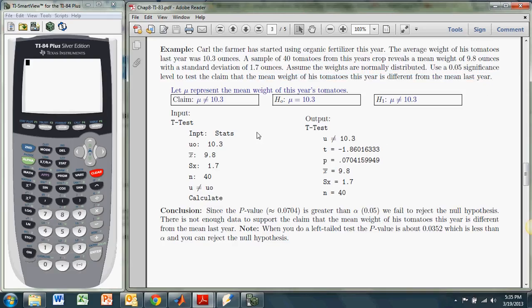And even though we'll have the TI doing most of the hard work here, we do have to set it up correctly. And so we have to look at our claim and get our null and alternate hypothesis, because that will be important. So our claim here is that the mean from this year is different from the mean last year. So we're saying the mean mu, the mean from this year is different from 10.3.